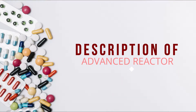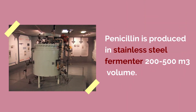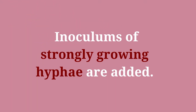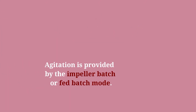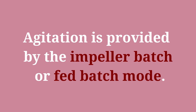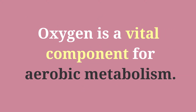Description of the advanced reactor. Penicillin is produced in a stainless steel fermenter of 200 to 500 cubic meters volume. Inoculums of strongly growing hyphae are added. Agitation is provided by the impeller in batch or fed-batch mode. The fermenter is steam sterilized and loaded with sterilized growth medium, but an airlift system is also used.